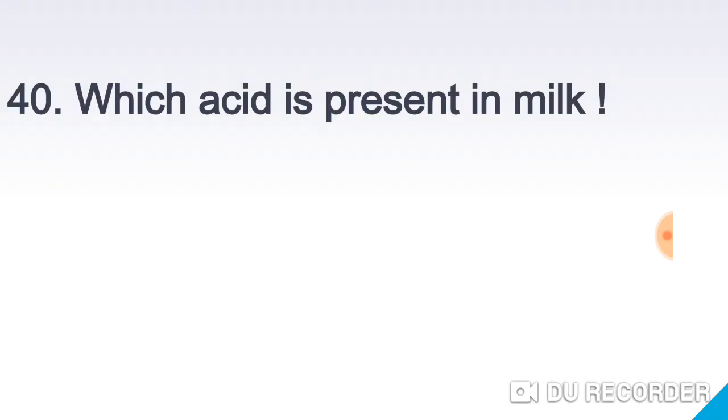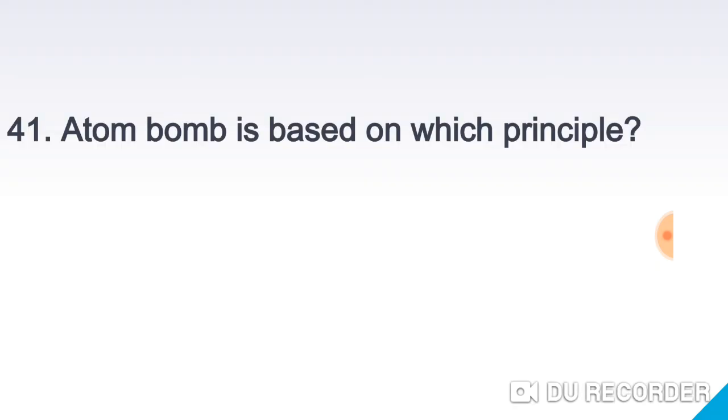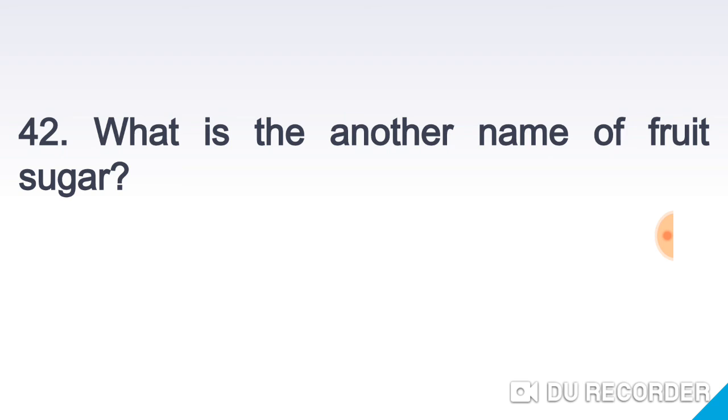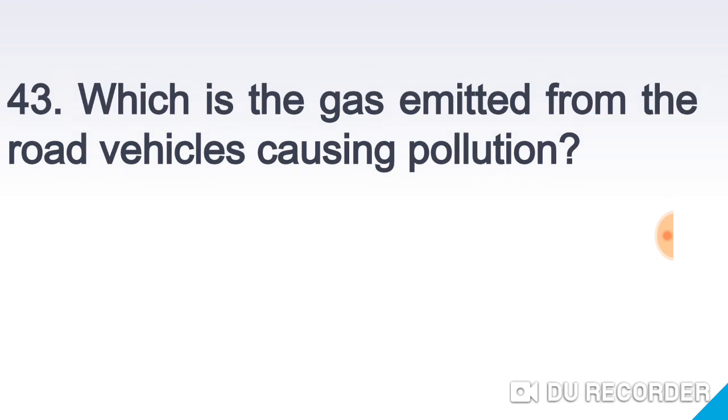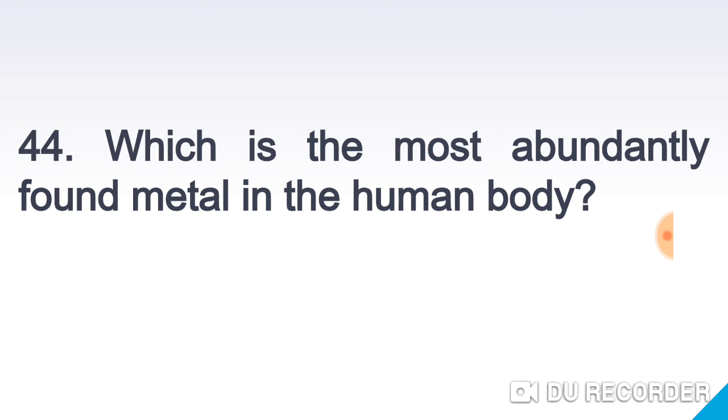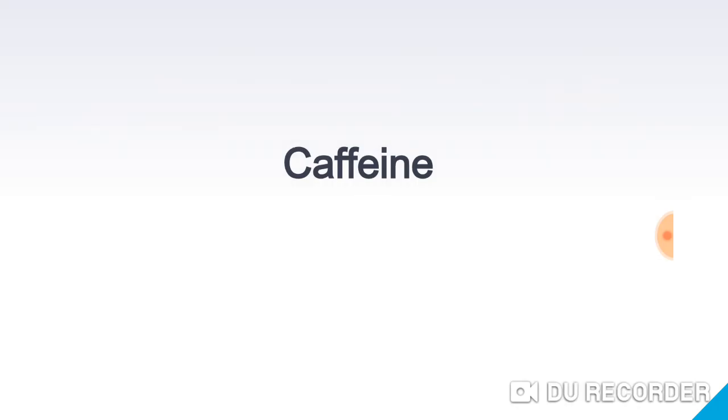Which acid is present in milk? Lactic acid. Atom bomb is based on which principle? Principle of nuclear fission reaction. What is another name of fruit sugar? Fructose. Which gas is emitted from road vehicles causing pollution? Carbon monoxide. Which is the most abundantly formed metal in the human body? Calcium. Name the main active ingredient of tea and coffee? Caffeine.